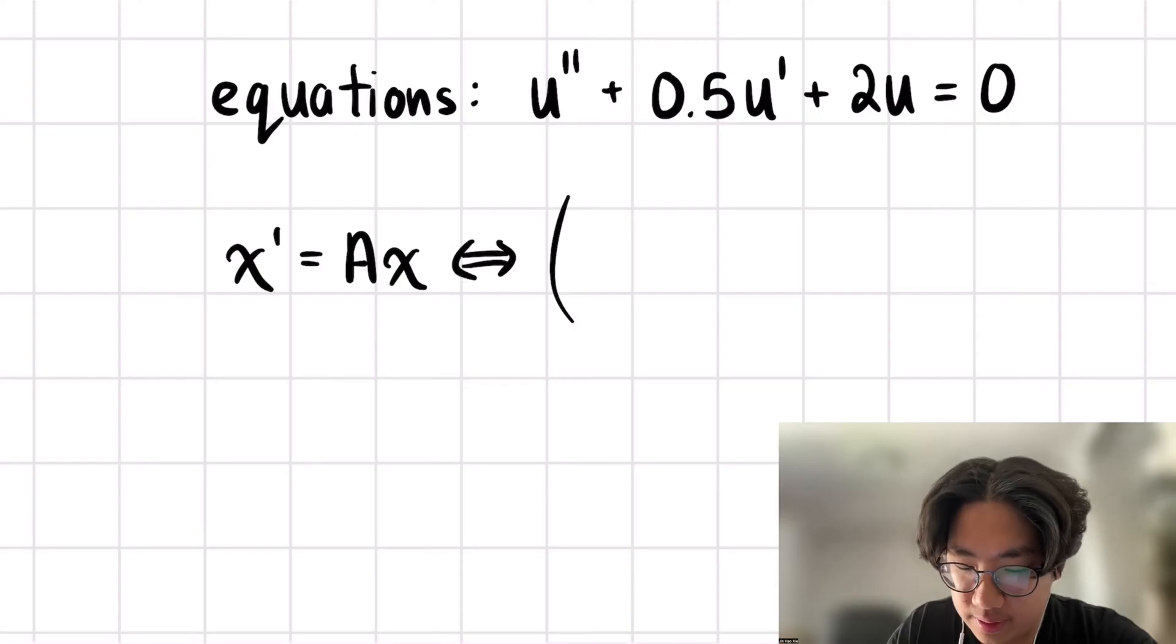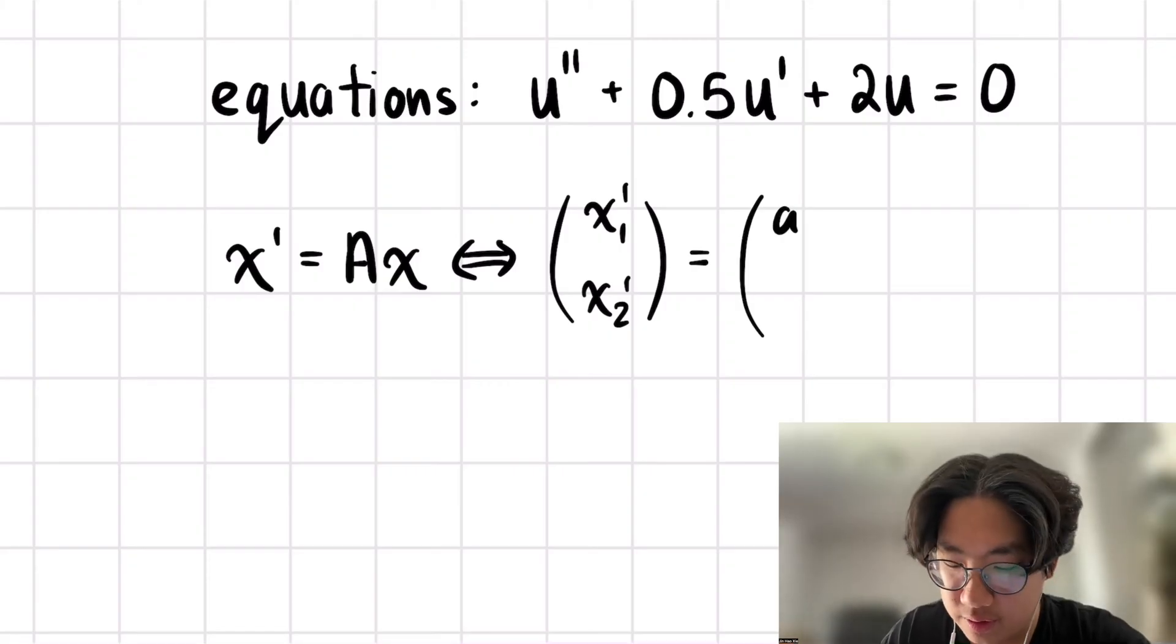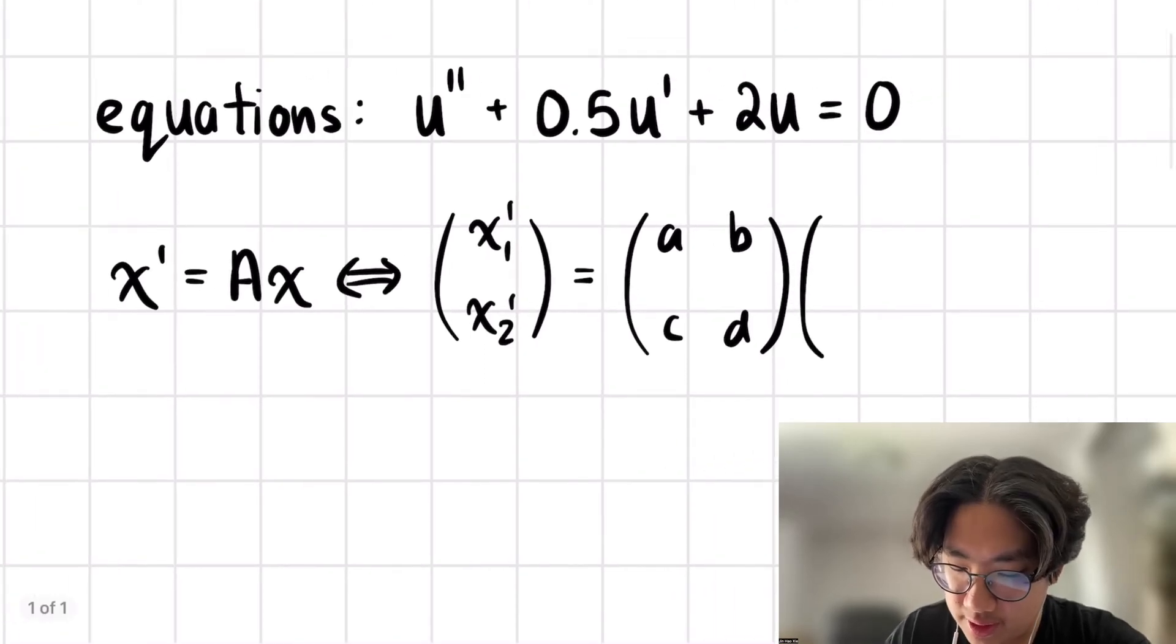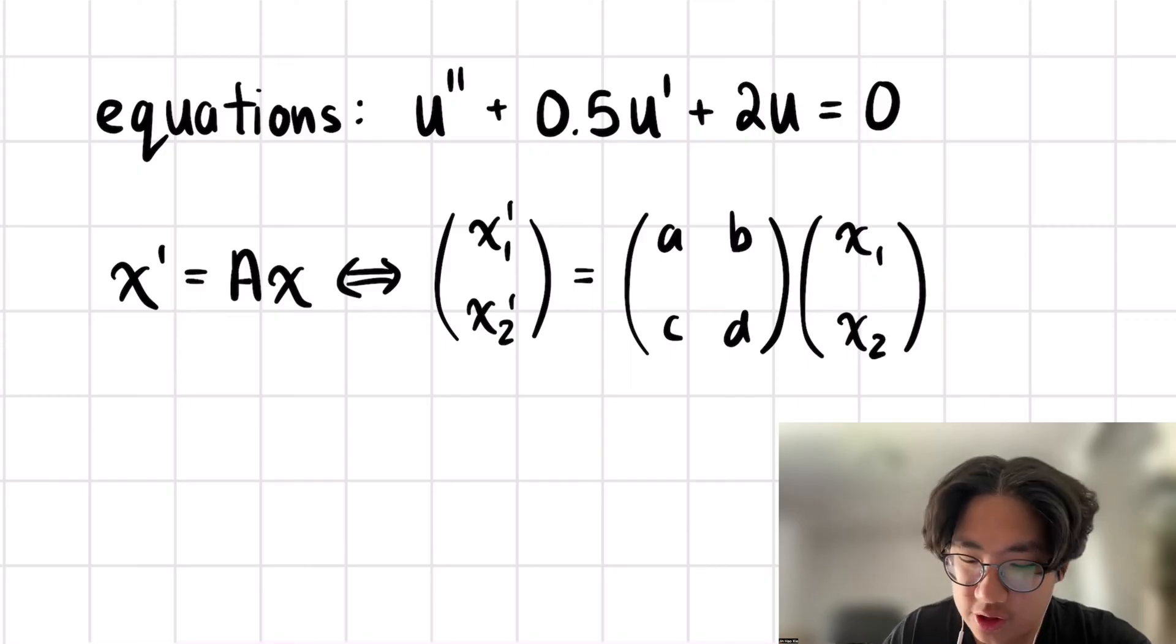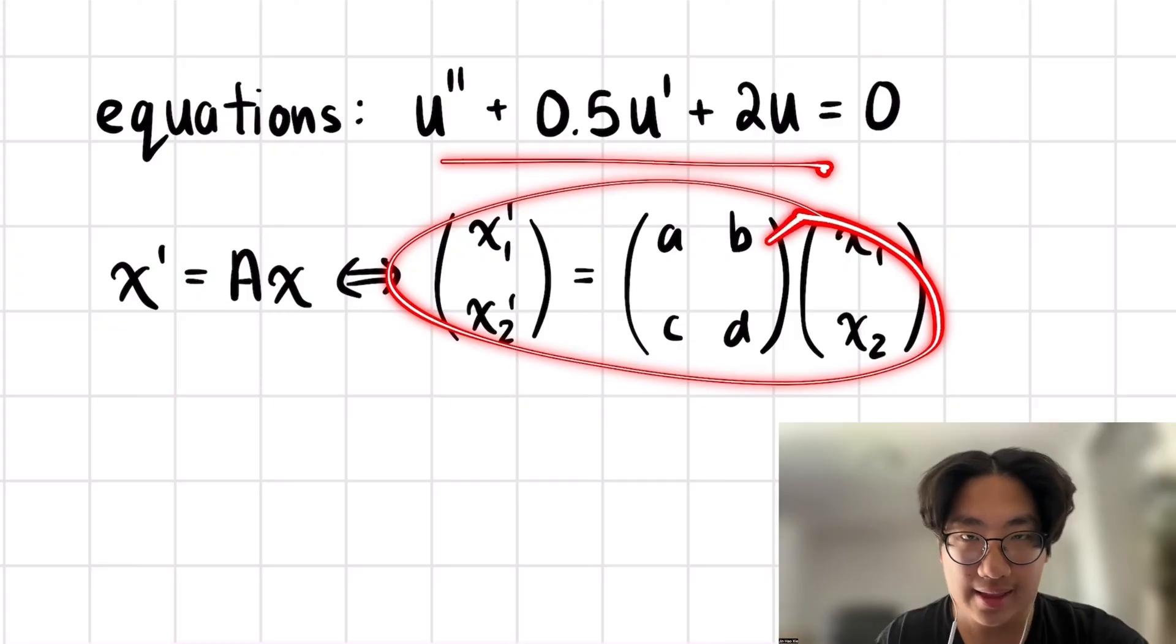We can break down x prime into the component functions. So x1 prime and x2 prime. And this is going to be equal to some matrix with arbitrary entries ABCD, and then times x, which is just x1, x2. So our overall goal here is to convert this into something like this.